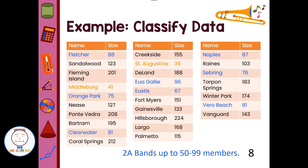Let's move up to 3A. 3A is going to be from 100 to 149 members. And there's one, two, three, four, five, six bands in the 3A category.